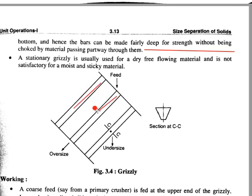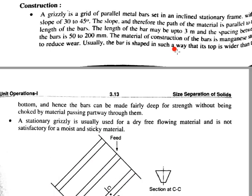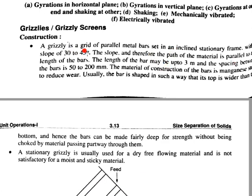In the grizzly screen figure, you can see: screen 1, 2 and 3; the feed inlet; undersize material passing through; oversize material passing over; and the angle of inclination which is 30 to 45 degrees. The slope directs the path of material parallel to the length of the bar. The length of the bar may be up to 3 meters, with spacing between bars of 50 to 200 mm.